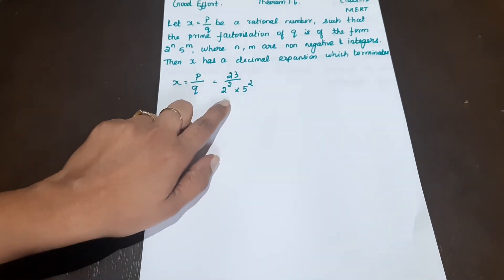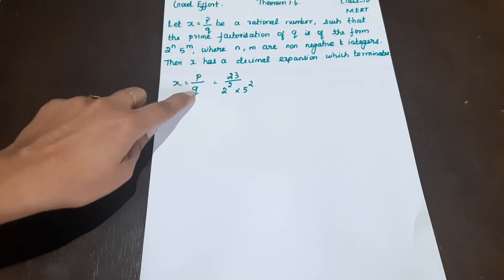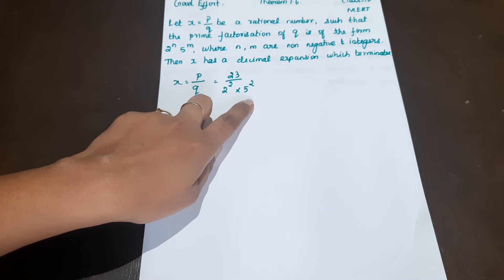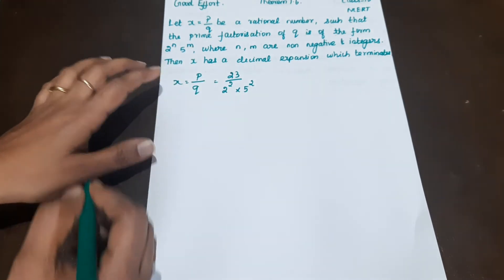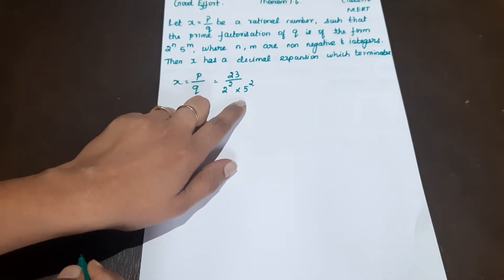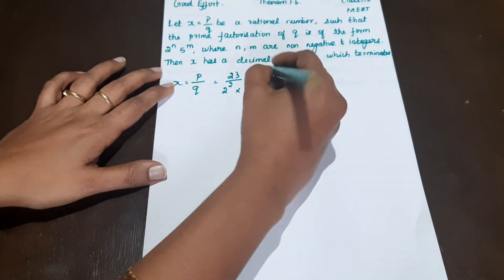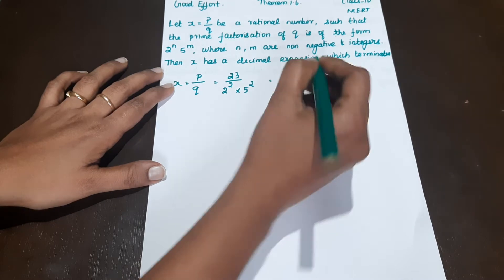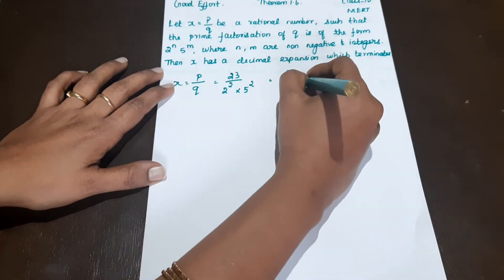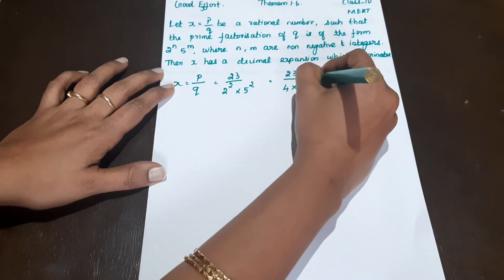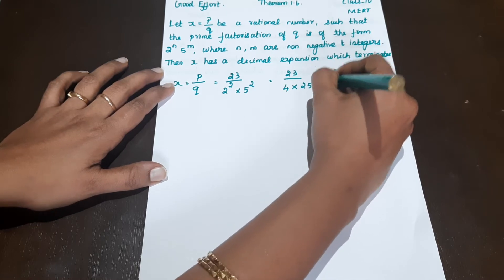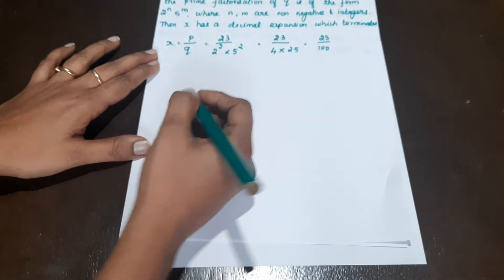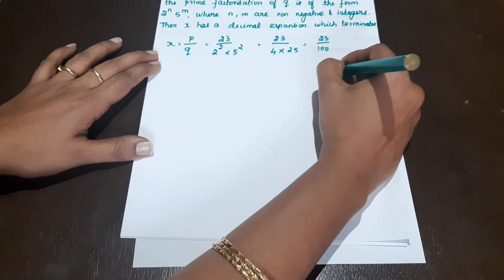Let's look at this. In the theorem it says, in q, the prime factorization has factors of the form 2 raised to the power n and 5 raised to the power m. So here q = 2² × 5² = 4 × 25 = 100. So we have 23 by 100.